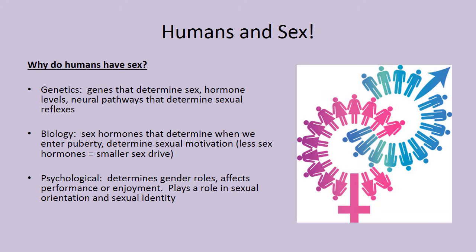Moving on to sex — why do humans have sex? There's genetics: genes that determine sex, hormone levels, and neural pathways that determine sexual reflexes. Around age 13 or 14, young people suddenly find the opposite gender — or in about 5% of cases, the same gender — starts to look good to them. Biology plays a key role: the sex hormones that determine when we enter puberty also determine sexual motivation. Some people have lower sex hormones, meaning a smaller sex drive, while others seem ready to go 24 hours a day.